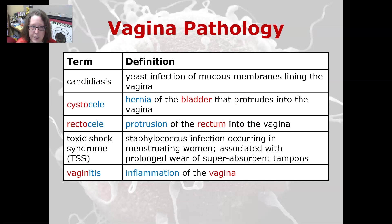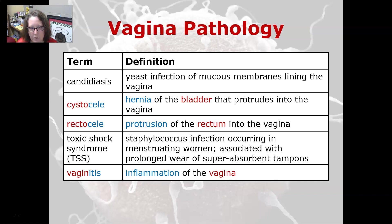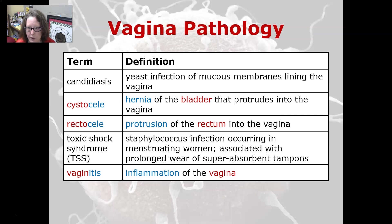Some vaginal pathology: candidiasis is a yeast infection of the mucous membranes that line the vagina. A cystocele is a hernia of the bladder that protrudes into the vagina. A rectocele is a protrusion of the rectum into the vagina. Toxic shock syndrome, or TSS, is a staphylococcus infection that occurs in menstruating women — it is associated with prolonged wear of superabsorbent tampons, which harbor the bacteria and cause it to grow, and it can be really dangerous. Vaginitis is an inflammation of the vagina.